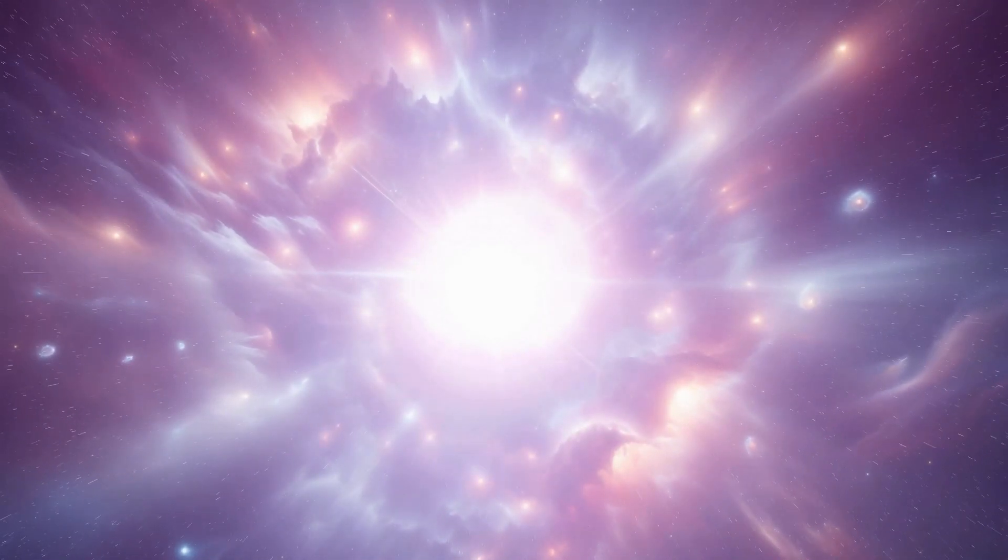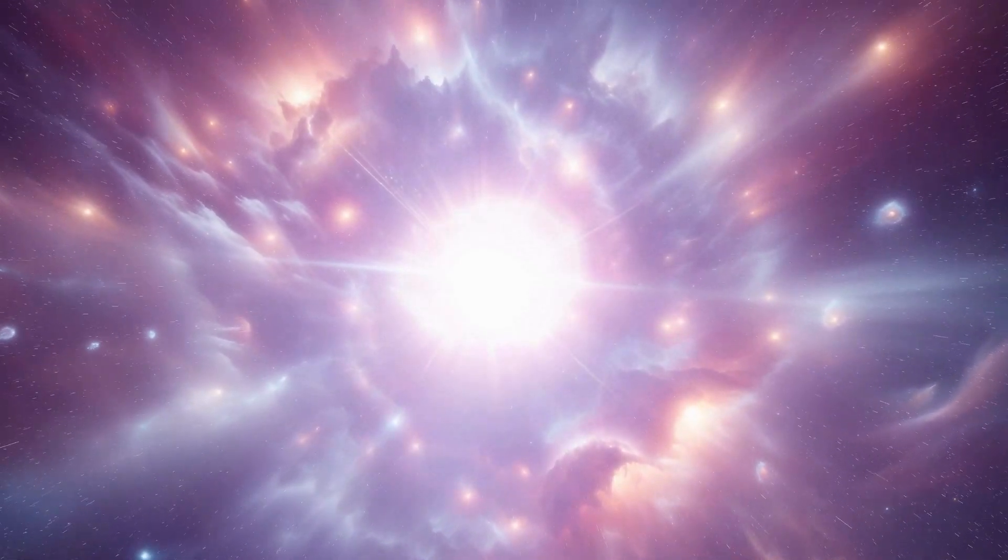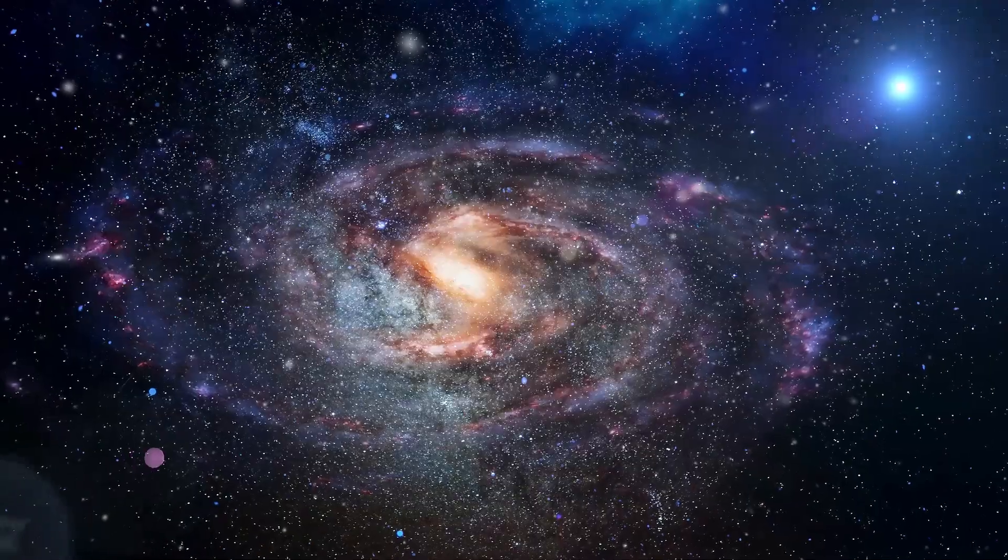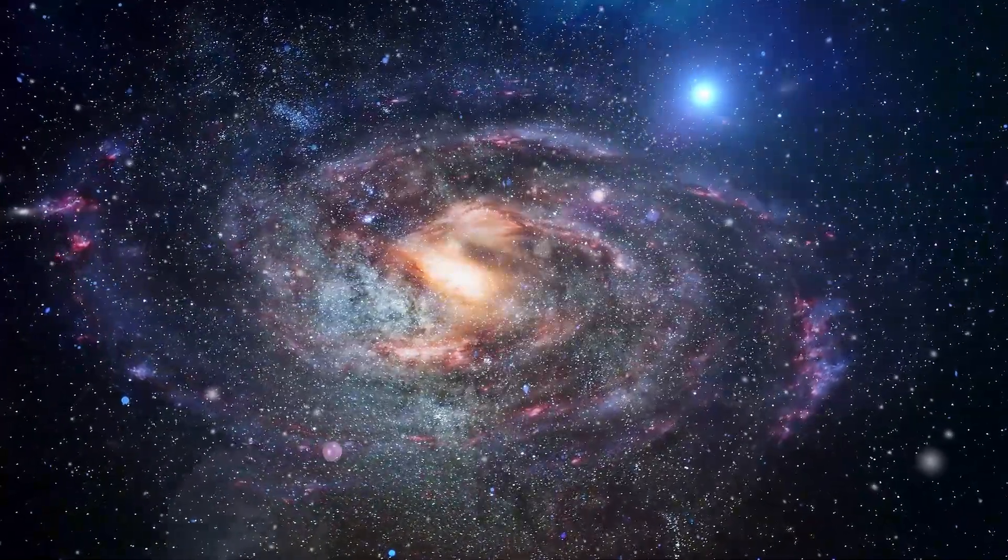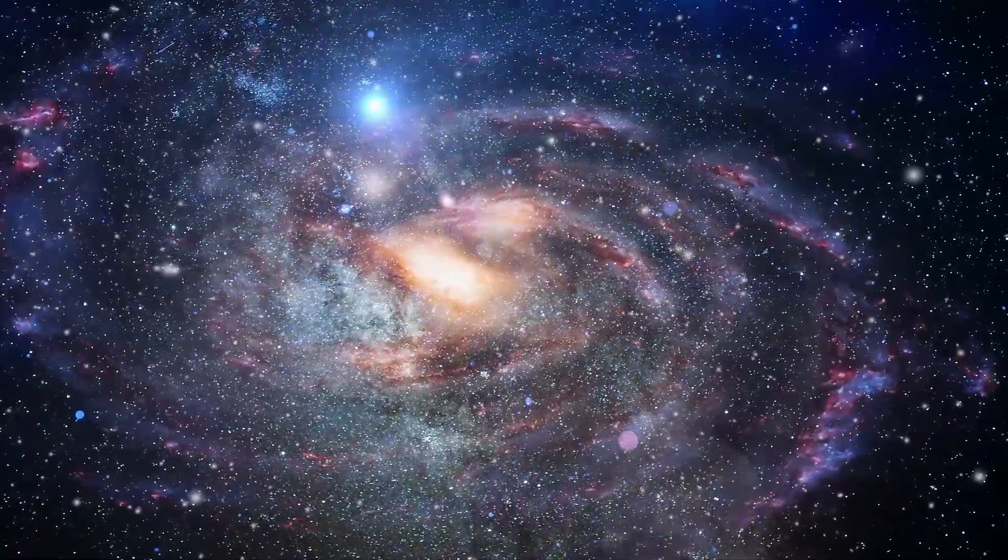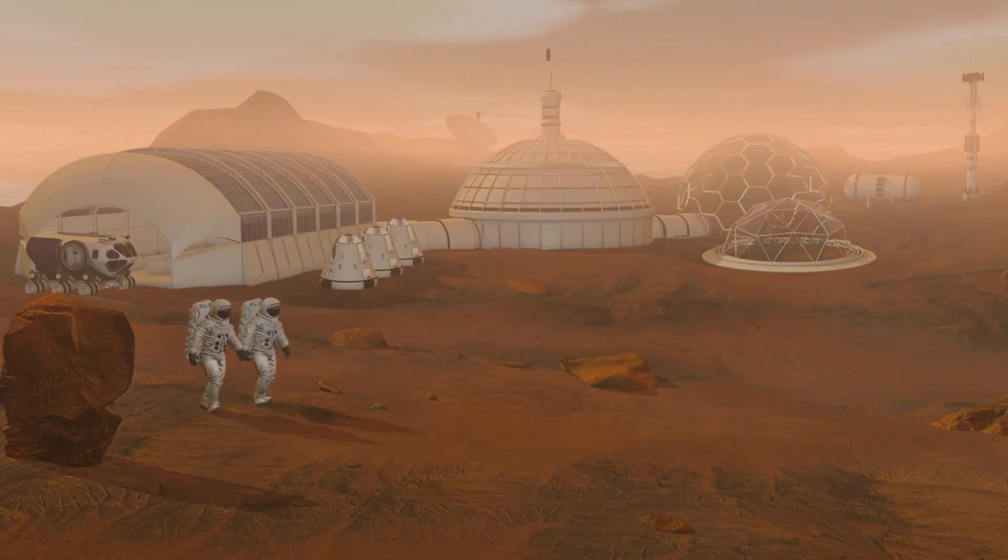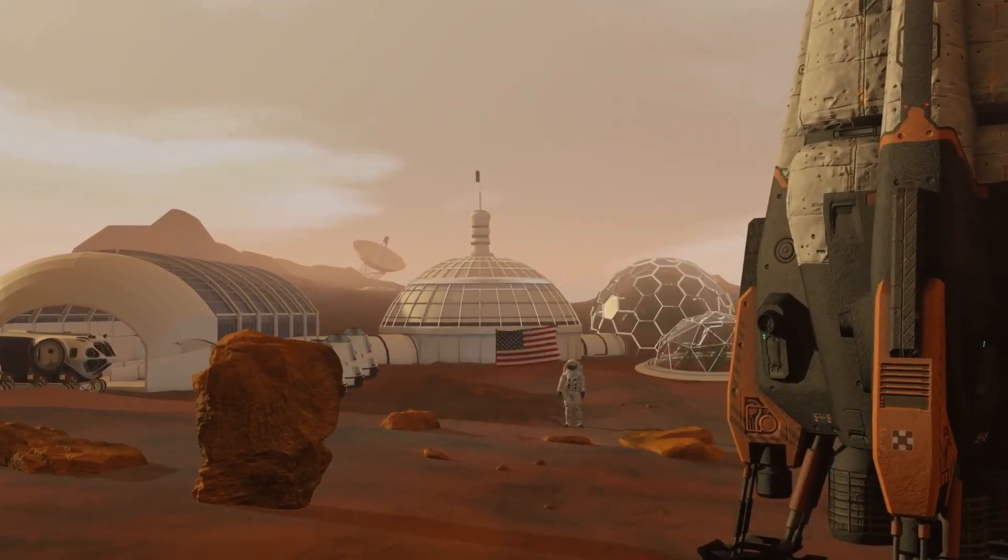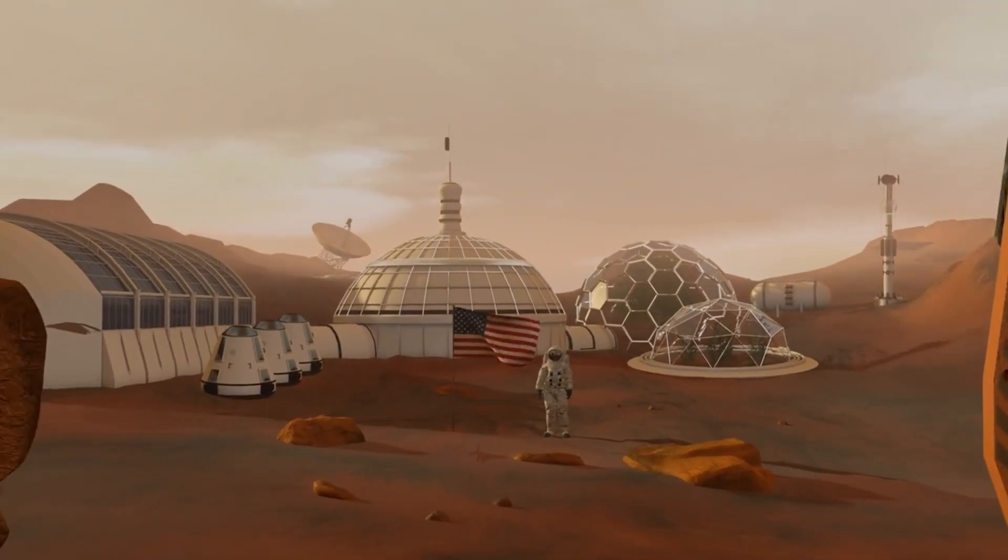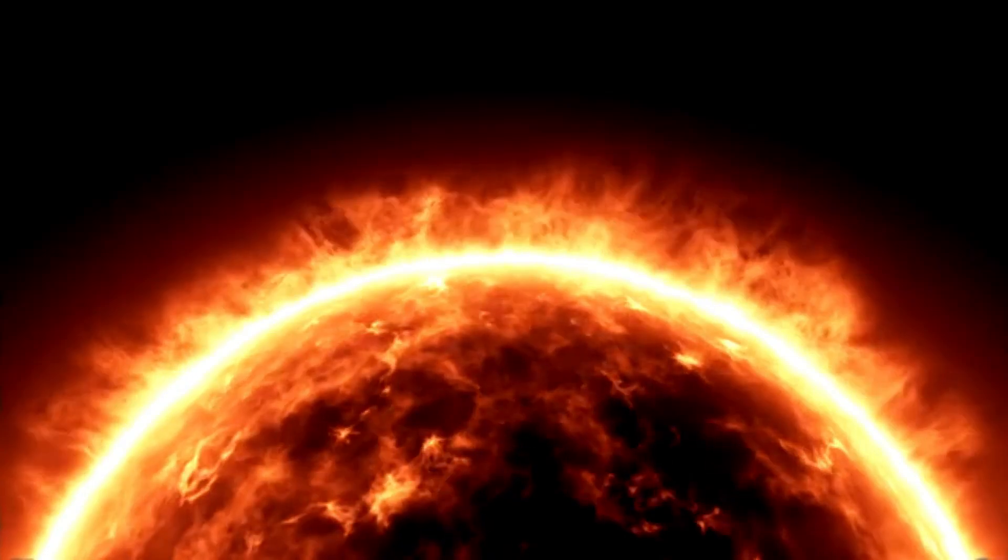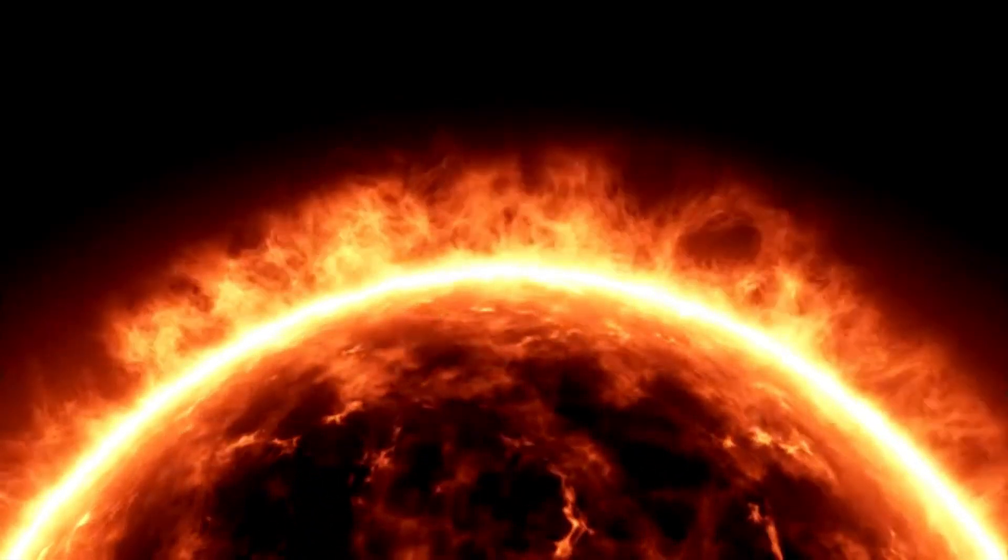One type of exoplanet that has caught the attention of space scientists is the gas giant. These planets are similar in structure to Jupiter and Saturn but are much larger. Some of these behemoths have been dubbed super-Jupiters, surpassing even the largest planet in our solar system. But that's not all. There are also hot Jupiters, gas giants that orbit incredibly close to their host star. They exist in a blistering environment with temperatures high enough to melt metal. Imagine being able to observe such a planet up close with its violent storms and extreme heat.